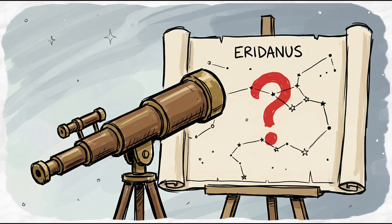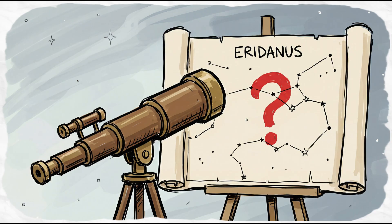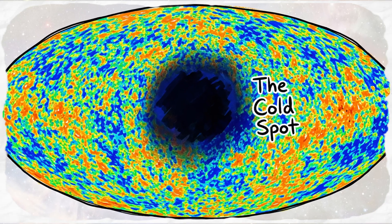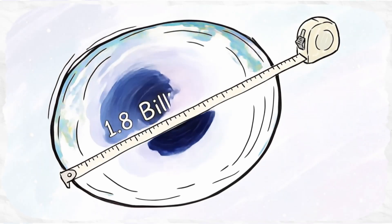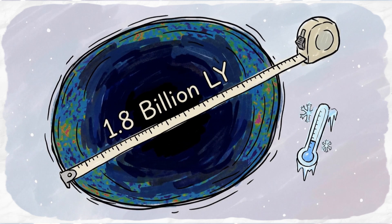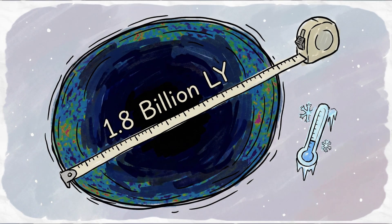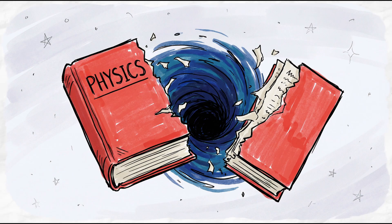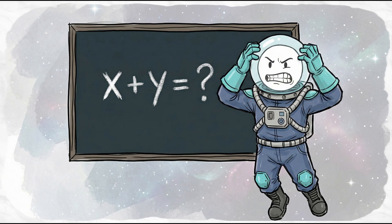Then we looked at the constellation Eridanus and found a problem, a massive cold spot. It's 1.8 billion light-years wide, and it's way colder than it has any right to be. Physics says this spot shouldn't exist. It drives cosmologists crazy.